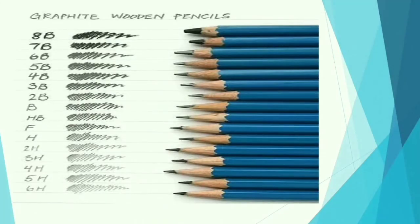So here is an example of a graphite wooden pencil. The 8B is the softest pencil — it is dark, the darkest. And then the 6H is a hard pencil — it produces the lightest marks of all.